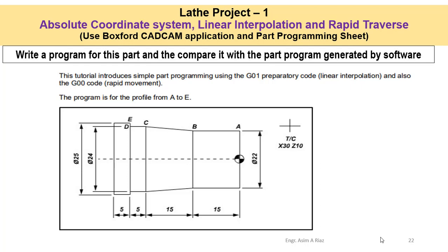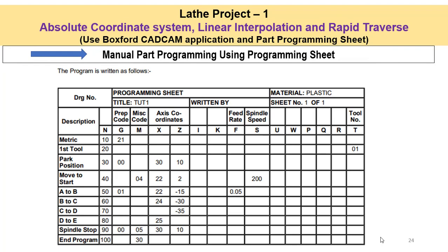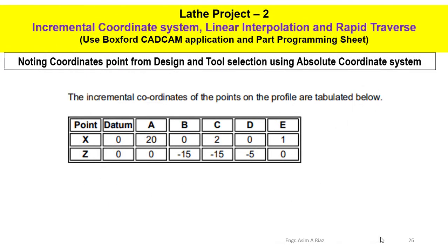We will compare the G&M codes generated by the software with the manual part programming sheet. In this lab we will do the same practice but using the relative coordinate system. You have to note the datum point — the node points are corner or endpoints A, B, C, D, E. In incremental coordinate system, the last point is the reference point, while in the absolute coordinate system, the datum point is the reference point for all point calculations.